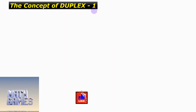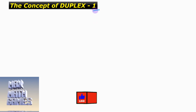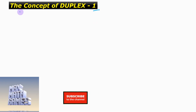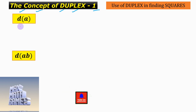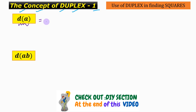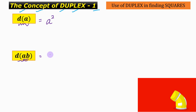Hello guys, welcome to the first class on the concept of duplex. The duplex of a single-digit number is defined as the square of that number. The duplex of a two-digit number is defined as 2 into the first digit into the second digit.